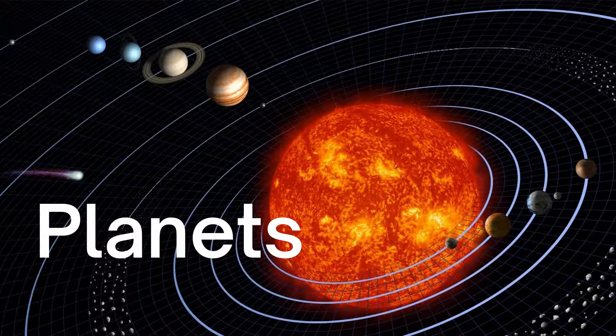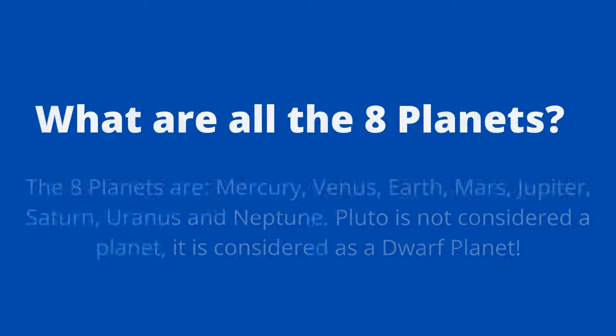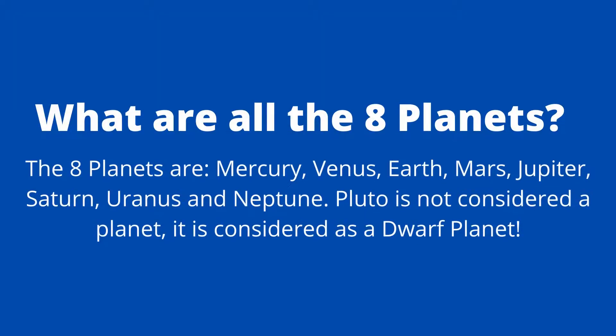Hello friends! In this video we are going to be learning about planets. What are all the eight planets? The eight planets are Mercury, Venus, Earth, Mars, Jupiter, Saturn, Uranus, and Neptune.